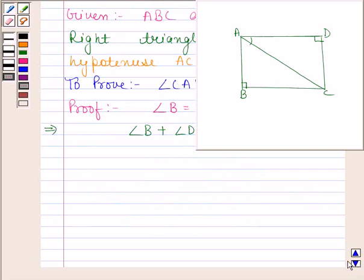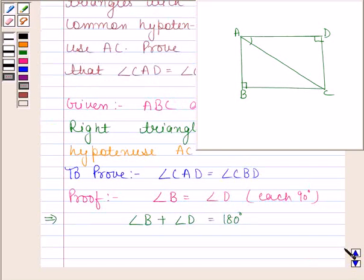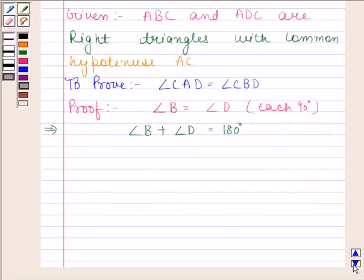And this implies ABCD is a cyclic quadrilateral.